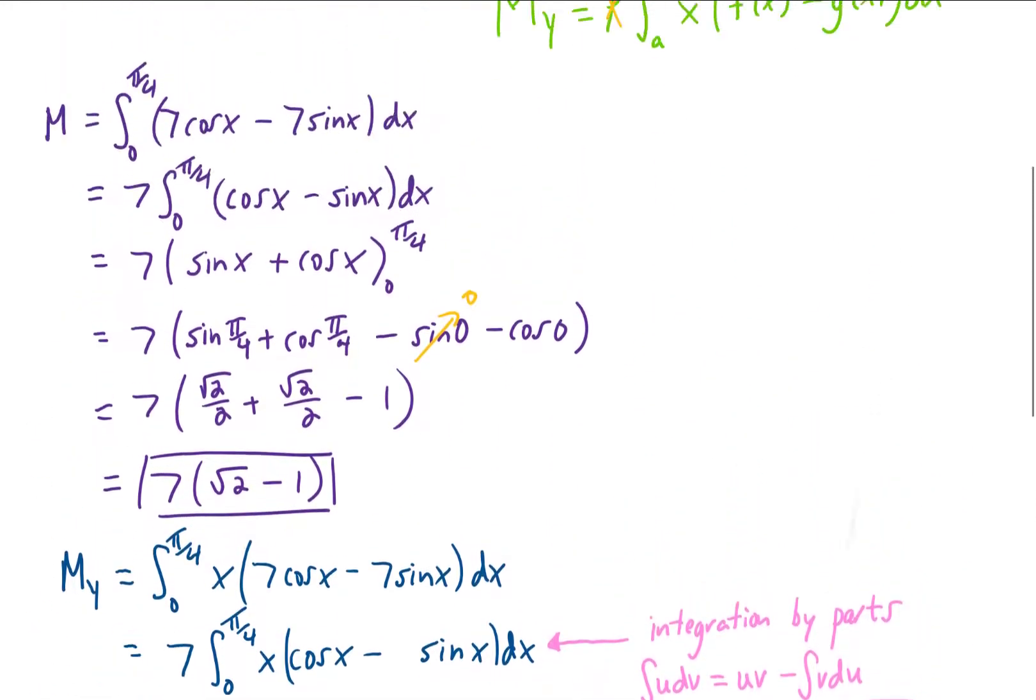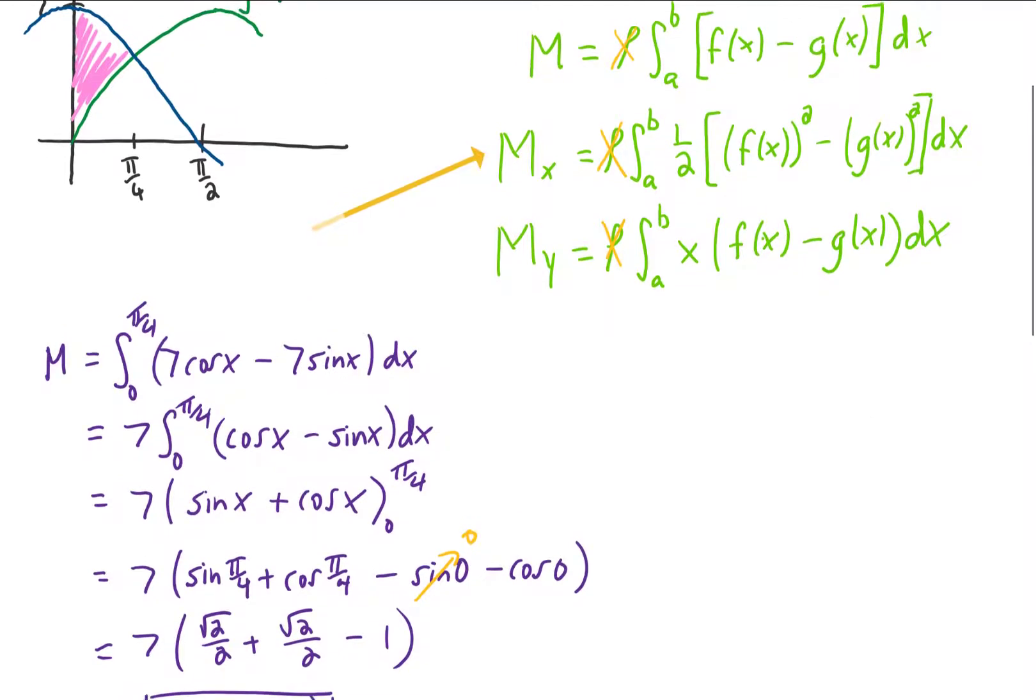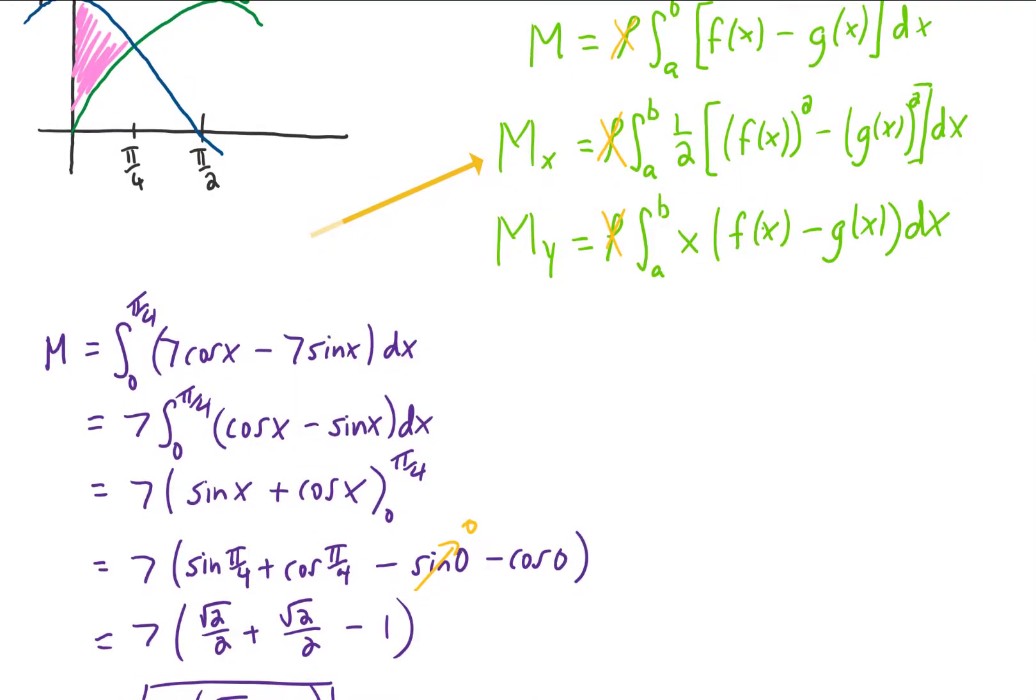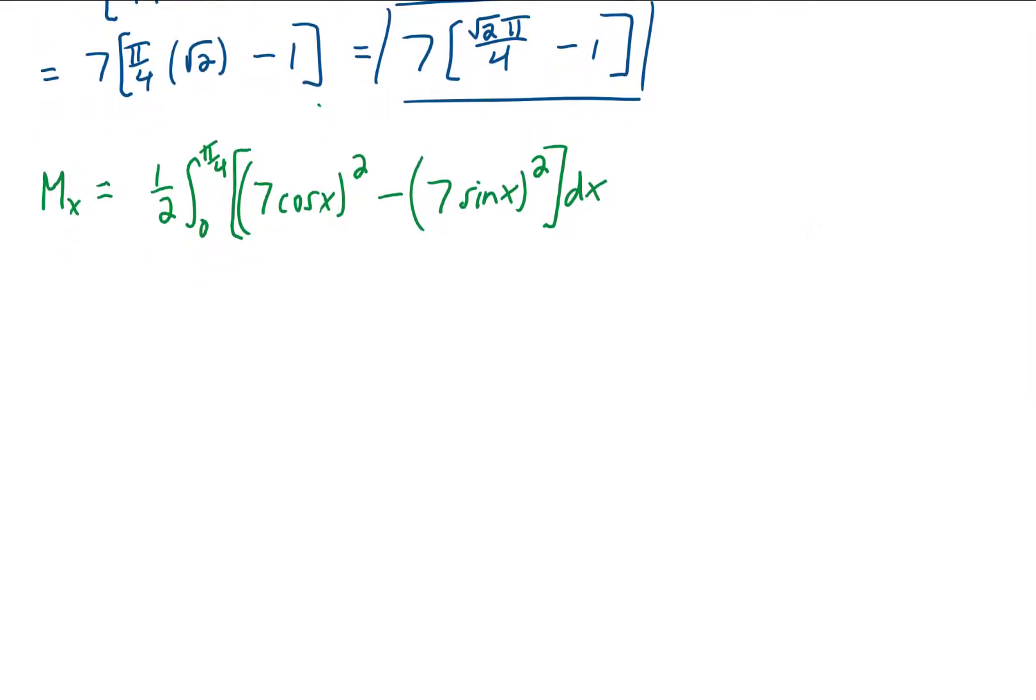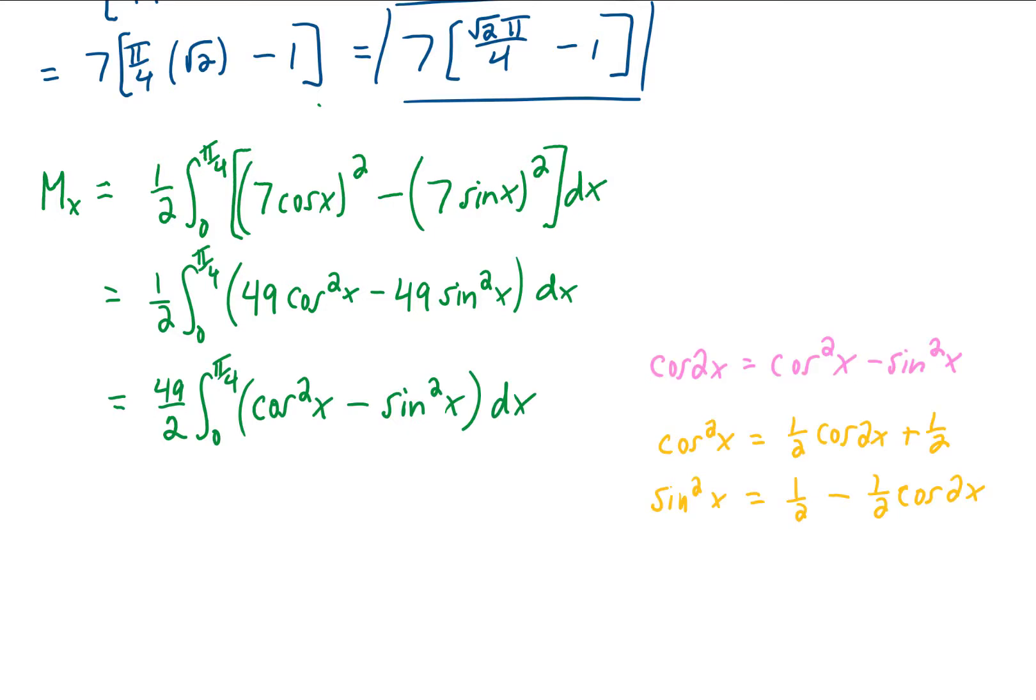Our m sub x is going to be next, and going all the way back here to recall the formula. I'm just going to scroll down and copy that thing. I just plugged f and g into that formula. We can square both of those functions. And we can pull the 49 outside of the integral.